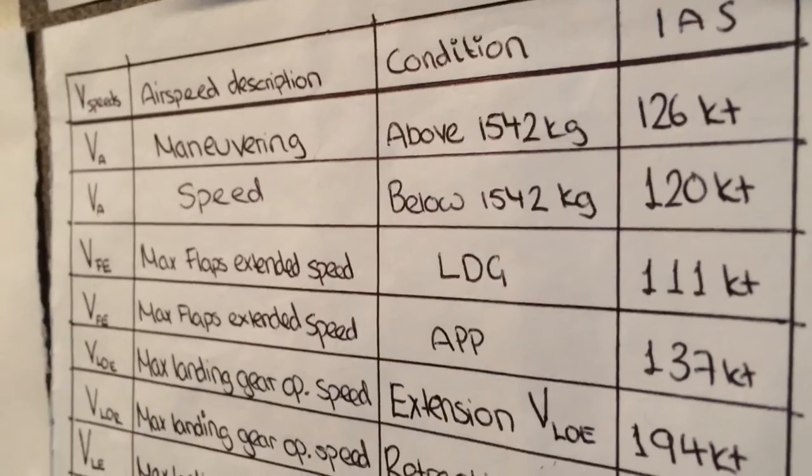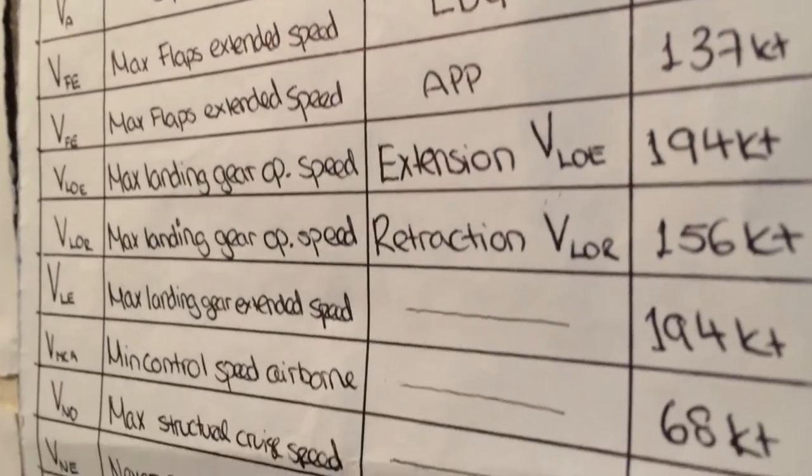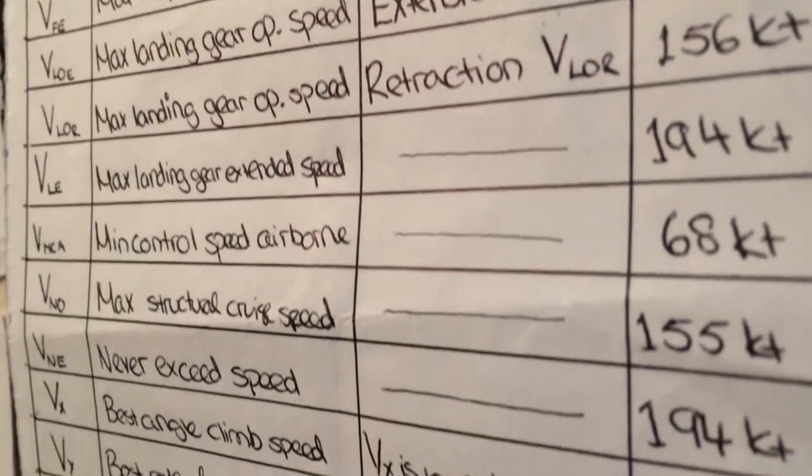In particular, note the minimum control speeds in the air, the best climb speed, the best angle of climb speed, and the best rate of climb speed for single engine. I personally made myself a little table, which I found very useful and very important. Don't forget to memorize the emergency checklists — you don't need to memorize all of them, but memorize the big ones.